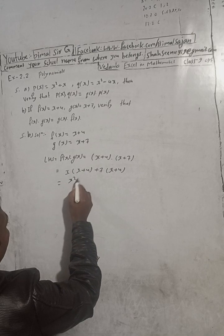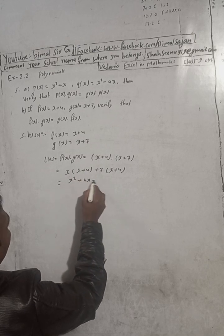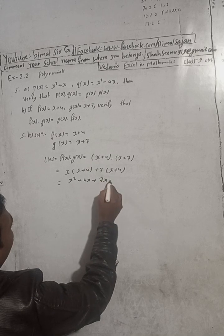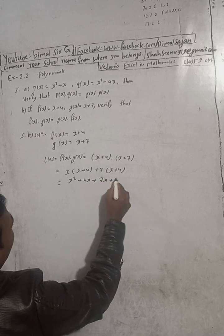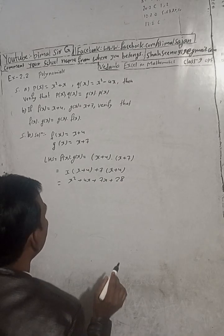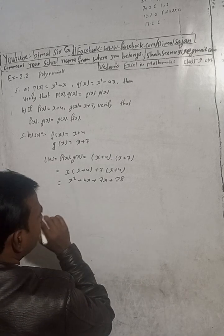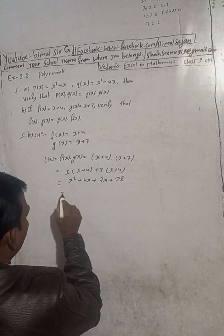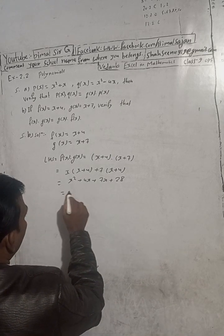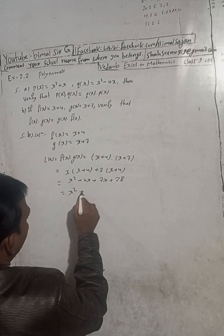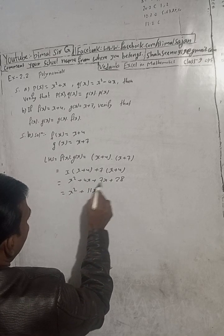Expanding: x into x gives x², x into 7 gives 7x, 4 into x gives 4x, and 4 into 7 gives 28. Combining like terms: 7x + 4x = 11x. So LHS = x² + 11x + 28.